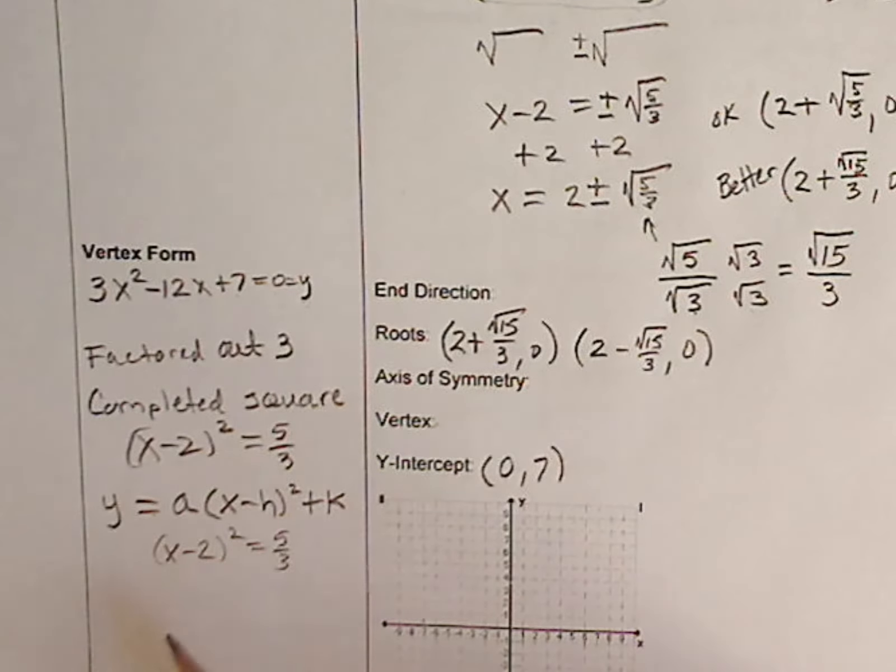And we now want to go into vertex form. Vertex form is where y is equal to a times the binomial x minus h squared plus k. h and k are the vertex.